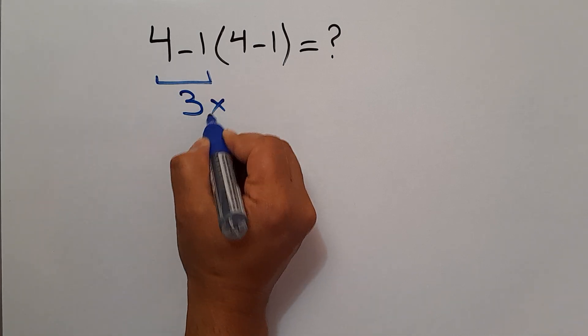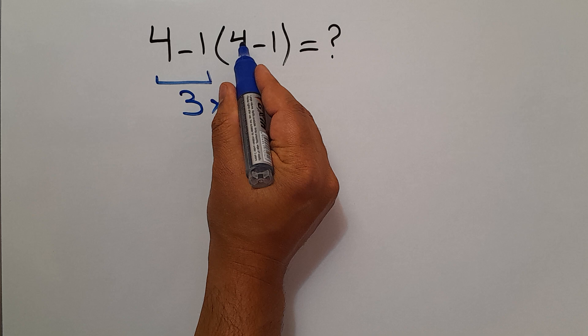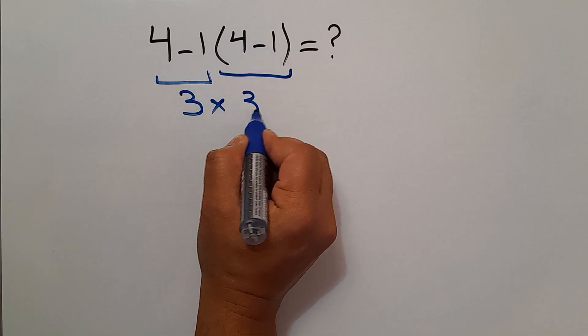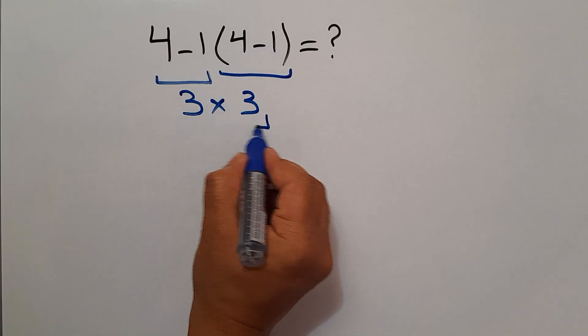3, and 3 times, here we have 4 minus 1 again which is 3, and 3 times 3 equals 9.